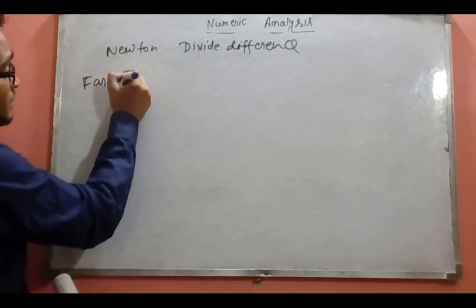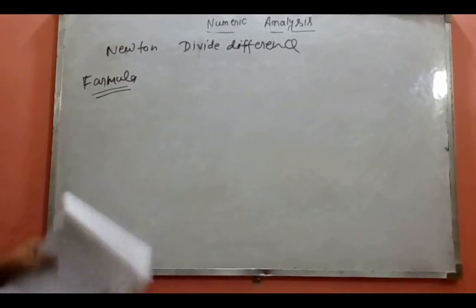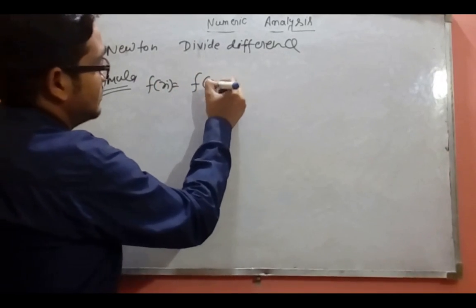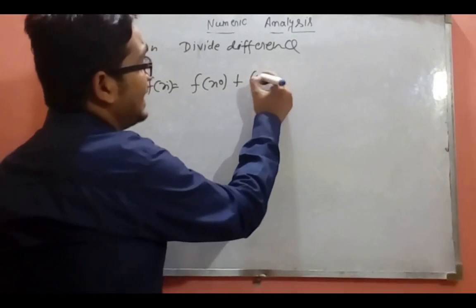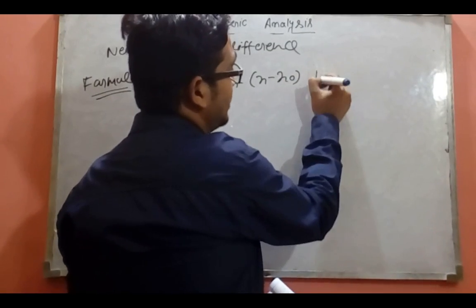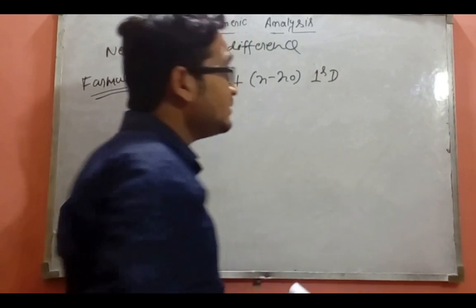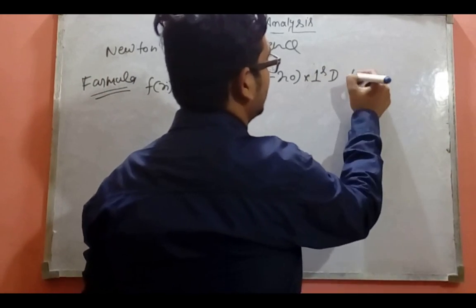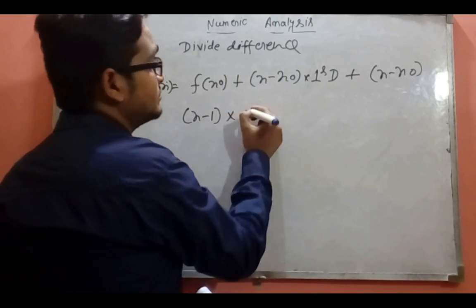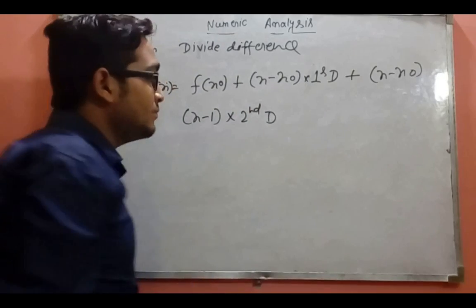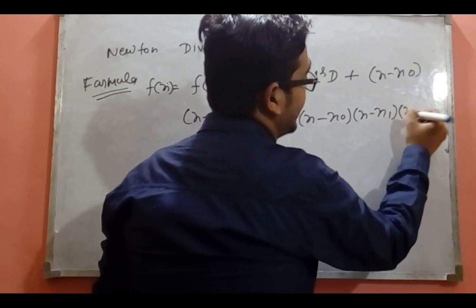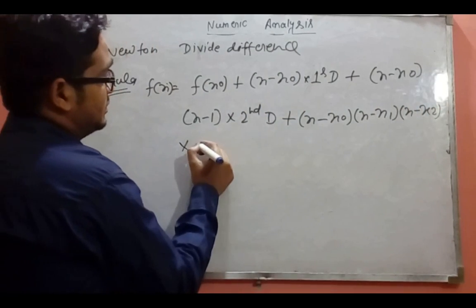Let's write the formula. The formula is: f(x) equals f(x0) plus (x minus x0) into the first divided difference, plus (x minus x0)(x minus x1) into the second divided difference, plus (x minus x0)(x minus x1)(x minus x2) into the third divided difference.